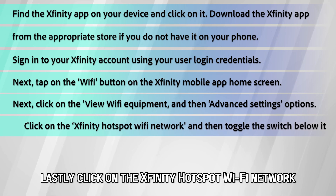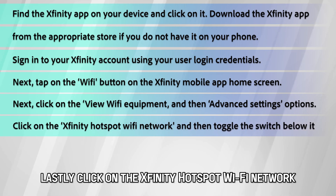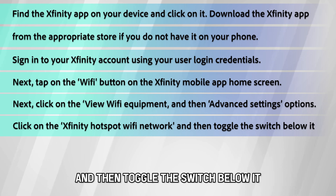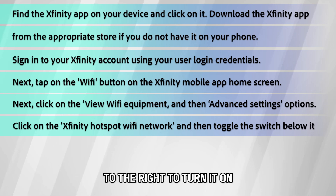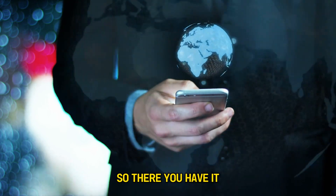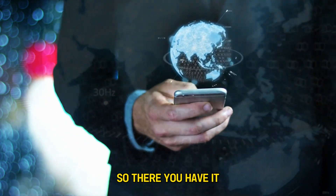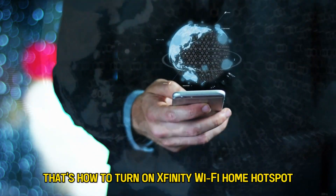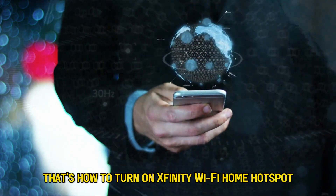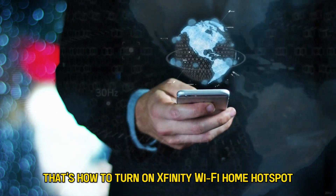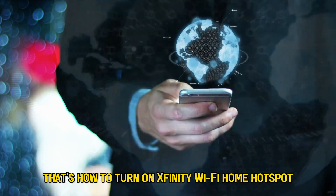Lastly, click on the Xfinity Hotspot Wi-Fi network and then toggle the switch below it to the right to turn it on. So, there you have it — that's how to turn on Xfinity Wi-Fi Home Hotspot.